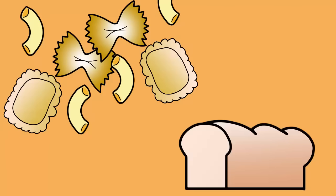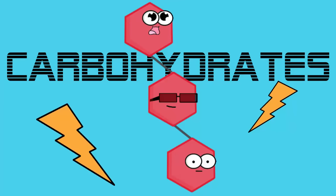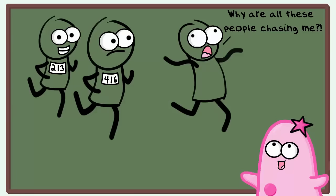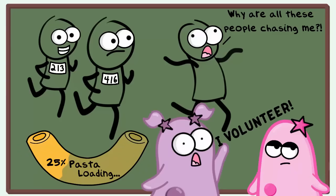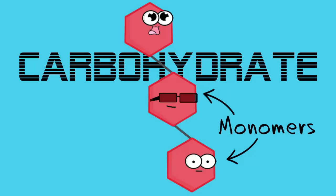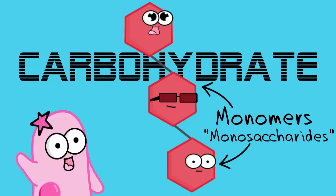Pasta and breads are examples of foods heavy in carbohydrates. Carbs are actually a very important source of energy — that's one big function of carbs. They are a great, fast source of energy. If you are a marathon runner, you might want to eat a lot of carbs the night before a race. Lots of marathon runners do this; it's called pasta loading. Now, carbs have a monomer. Remember, monomers are building blocks. The monomer for a carb is a monosaccharide. Monosaccharides make up carbohydrates.